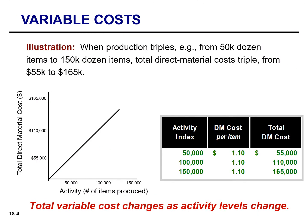Total variable costs change as the activity level changes. To illustrate, if our production triples from 50,000 dozen donuts to 150,000 dozen donuts, the total direct material cost will also triple, going from $55,000 to $165,000. Looking at the graph, you can see it starts at zero — if we produce zero dozen donuts, there is zero cost. The line slopes up and to the right, so as we produce or sell more donuts, that directly and proportionately increases our cost.